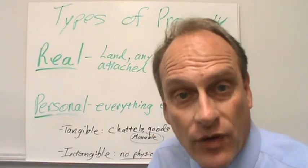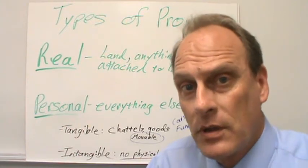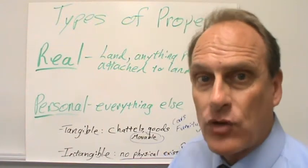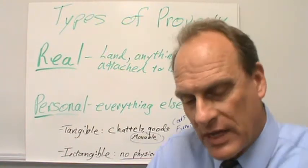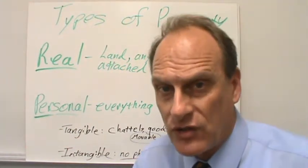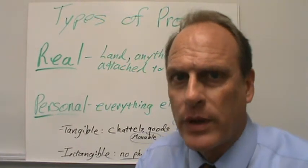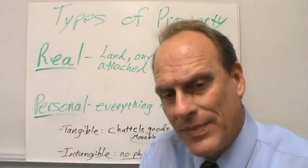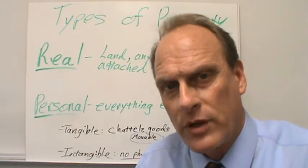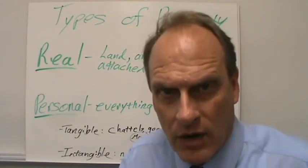Personal property is further divided into two categories: tangible personal property and intangible personal property. Tangible personal property is going to be movable — it's tangible, there's a physical existence to it, like cars, furniture, jewelry, clothing, any of those things that have a physical substance to them. They're almost always going to be movable, even livestock or chattel.